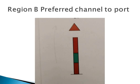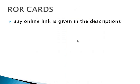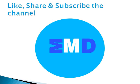Important note: in the preferred channel, the rhythm is always composite group flashing 2+1. You can buy ROR cards — the link is given in the description. Please like, share, and subscribe to the channel and help others. Thanks for watching.